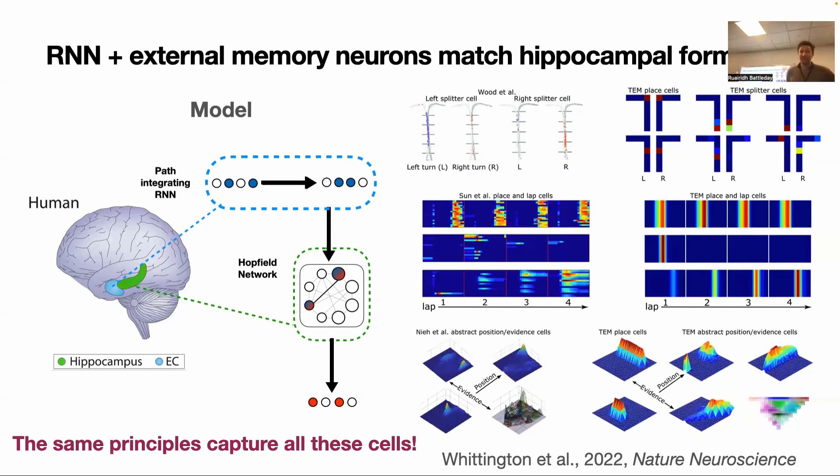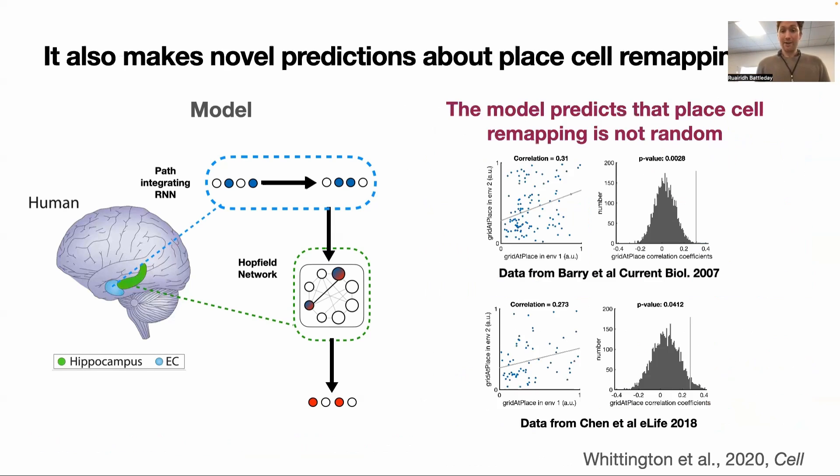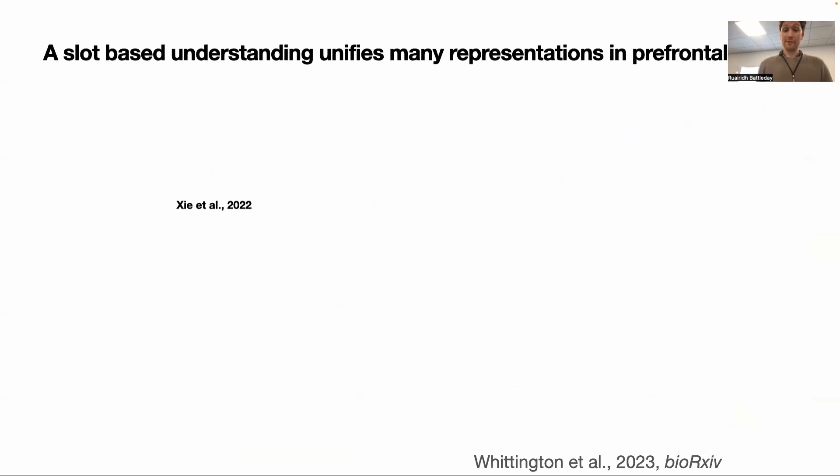Same principles capture all the cells. That's basically what this brain area is doing. So RNN plus an external memory. It's also the case that you can make some new experimental predictions from this model as well, but I'm not going to run into that. So that was some evidence that RNN plus external memory is what hippocampus is doing. So one bit of the brain is choosing one of the algorithms. What about the other bit of the brain?